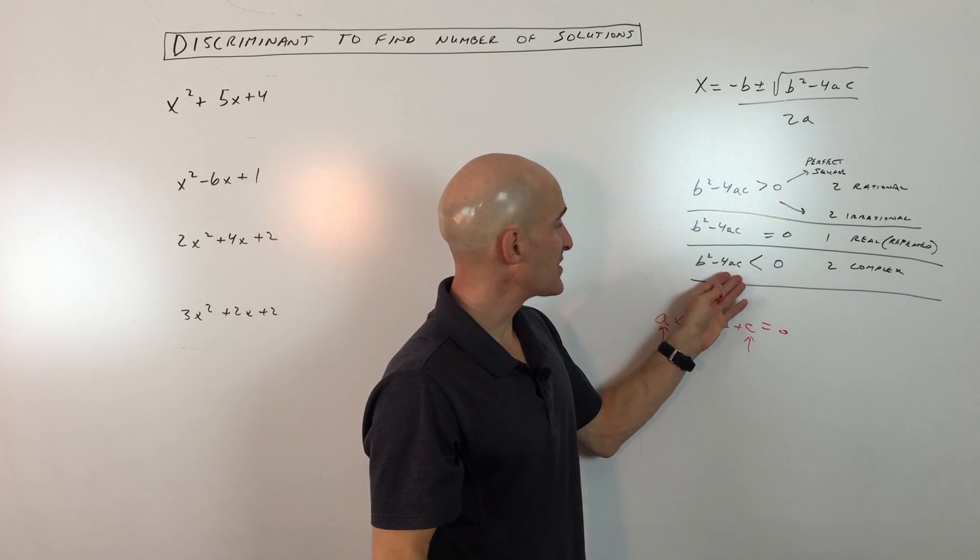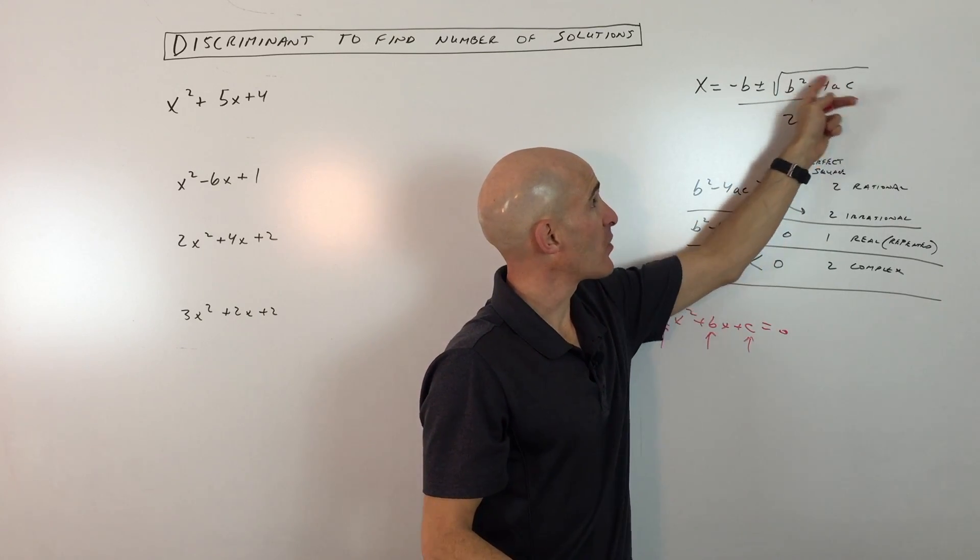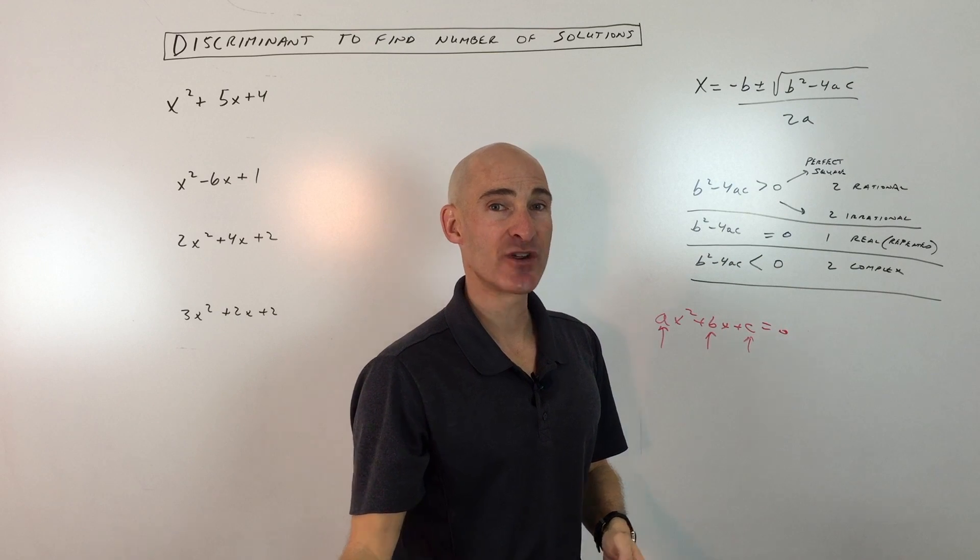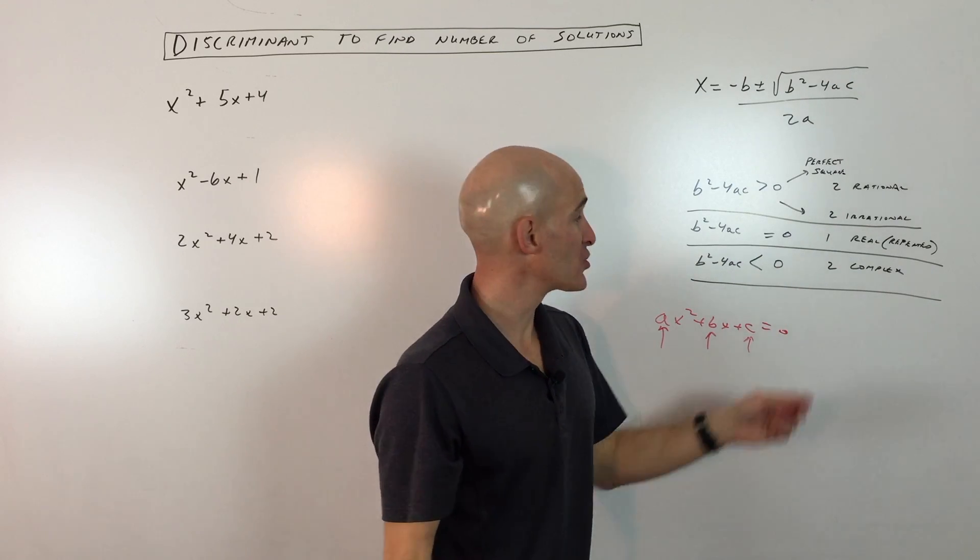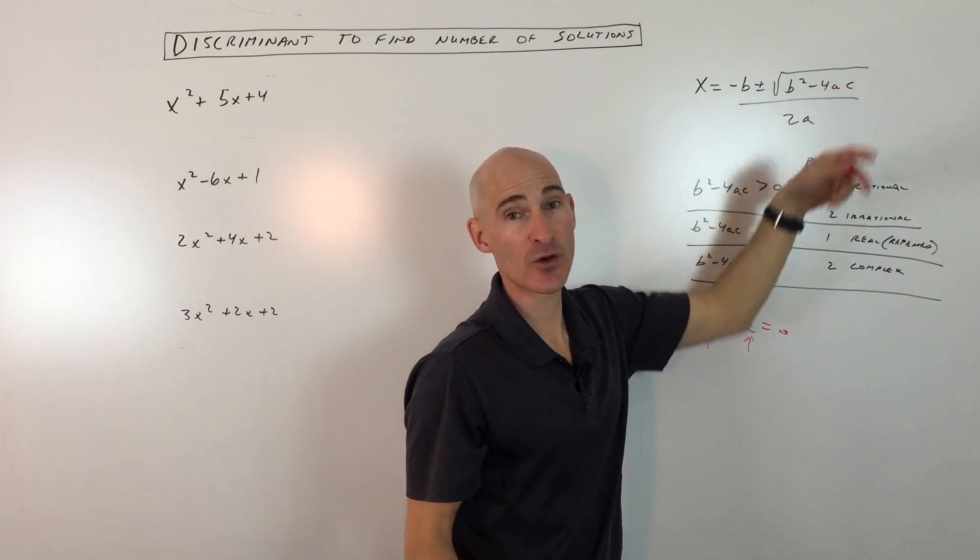And then the third case is that b squared minus 4ac is less than zero, meaning it's negative. This quantity underneath the square root would be negative. When you take the square root of a negative number, that's where you get the imaginary solutions, or what they call the complex solutions, and you're going to get two of those, negative b plus that quantity, negative b minus that quantity.